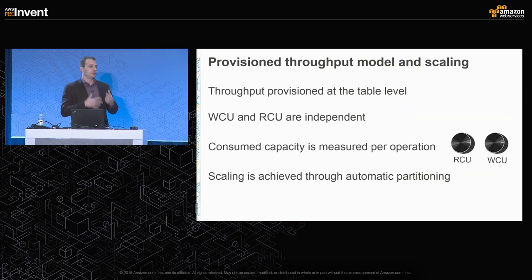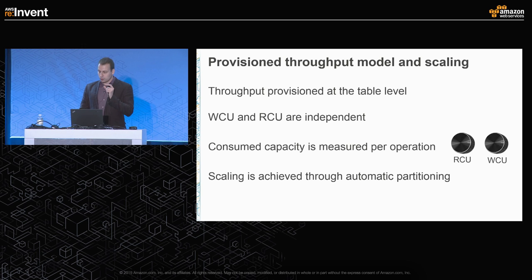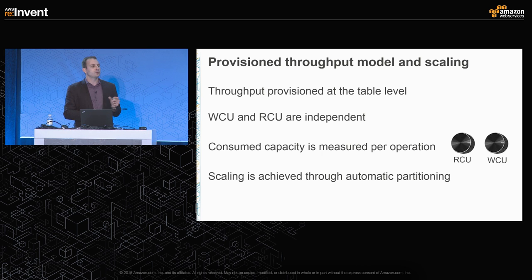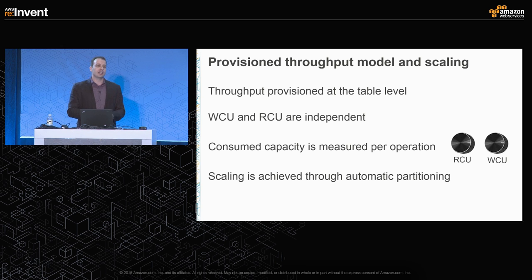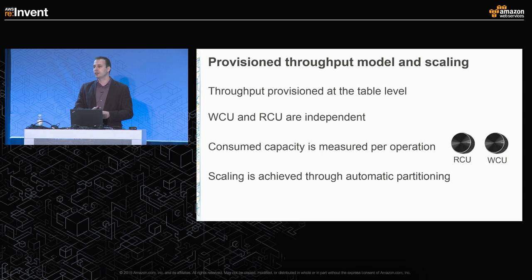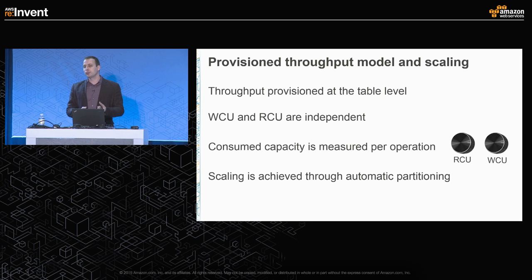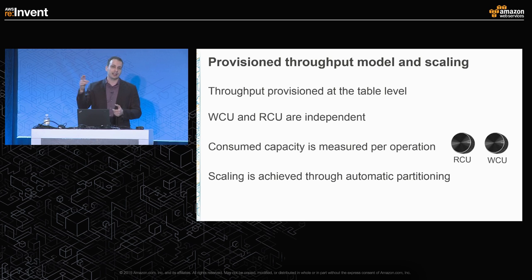The only input we need from you to run DynamoDB is: how many reads and how many writes are you going to do to that table? Those are two separate knobs you can turn up or down. Once you tell us that, behind the scenes we scale the data into enough physical partitions to accommodate any size and throughput. This is dynamic — if you have an e-commerce app preparing for Black Friday, you dial up provisioned capacity, and when you're done dial it back down. You only pay for the capacity provisioned at that moment.